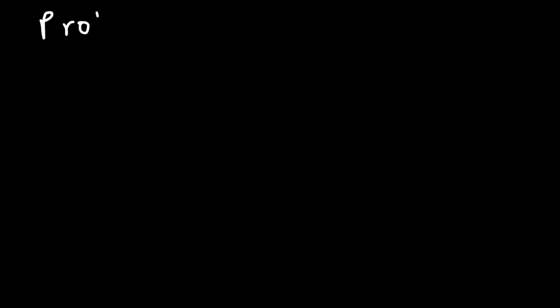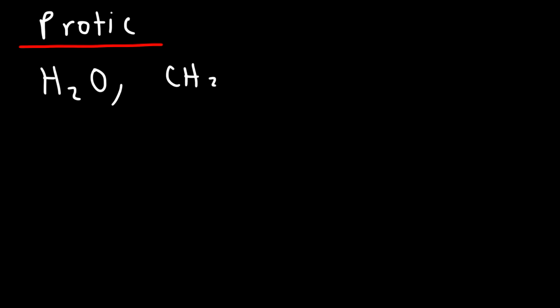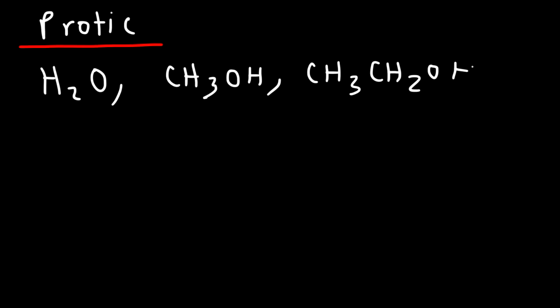In this video, we're going to discuss protic solvents and aprotic solvents. Protic solvents tend to have hydrogen bonds in them. Good examples are water, methanol, and ethanol. These are the most common examples you'll see when dealing with SN1 and SN2 reactions. Protic solvents favor the SN1 reaction.